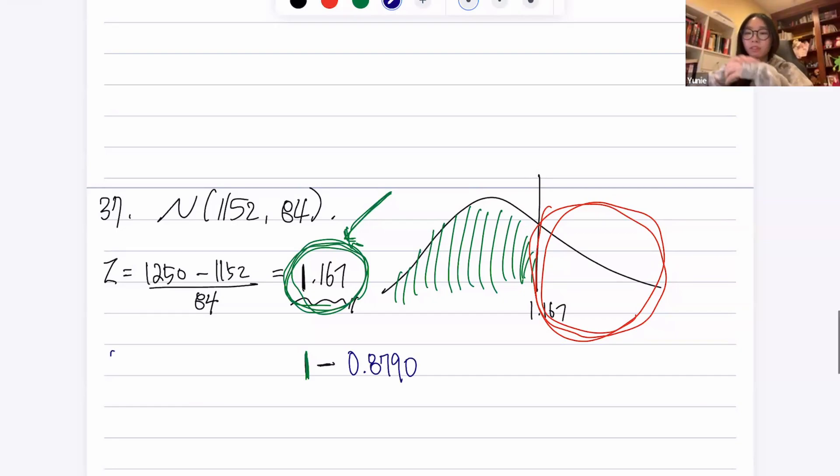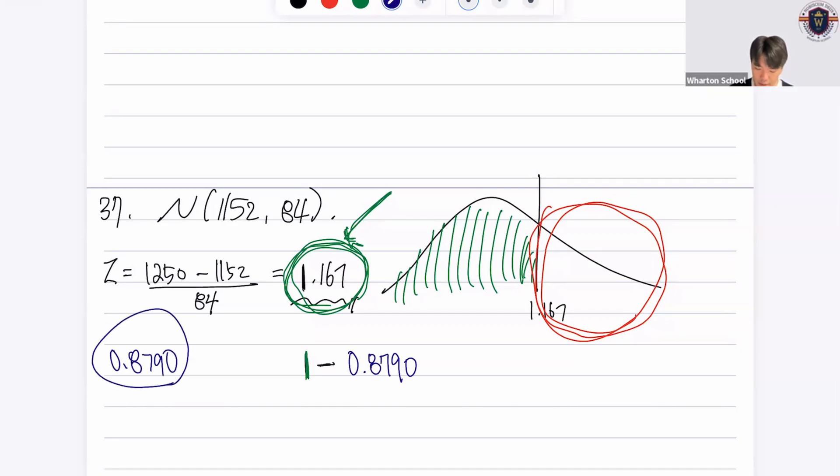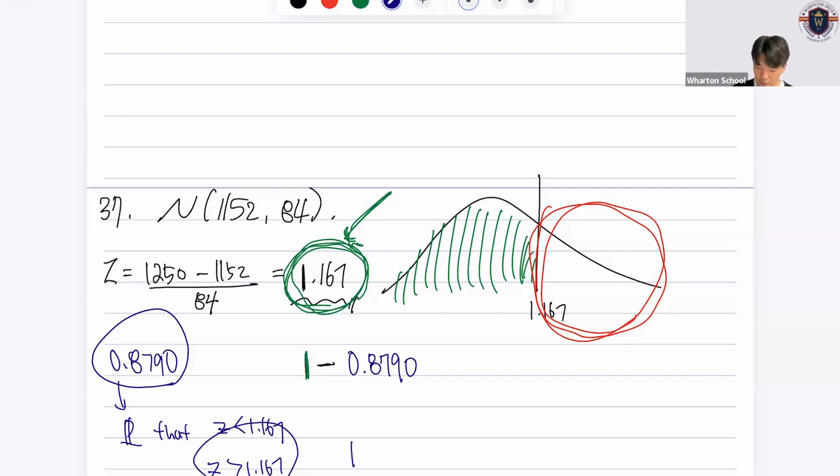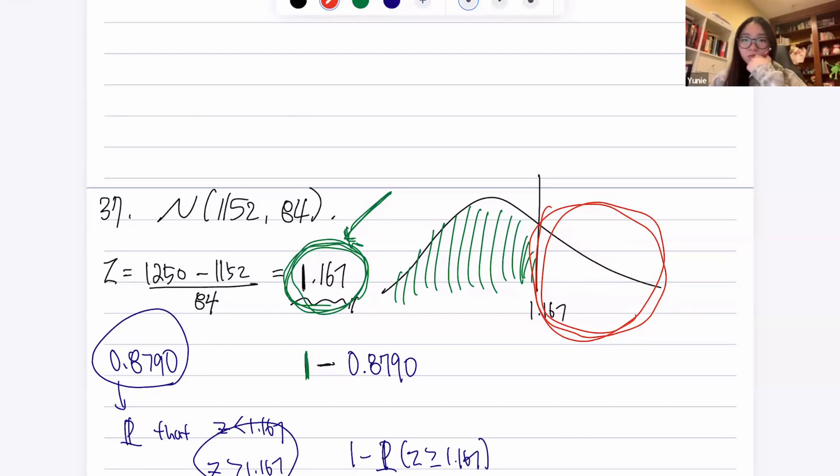So this tells you, this is the probability that the z-score is less than 1.167. This one, right? So since we know, we are wondering about this, this is what we're trying to find. So that's why we do 1 minus z, the probability that z-score is greater than or equal to 1.167. And we just found this one here.